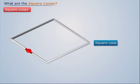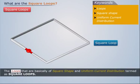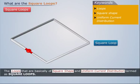The same case happens in case of square loop. Thus we can say that the loops that are basically of square shape and uniform current distribution are termed as square loops.